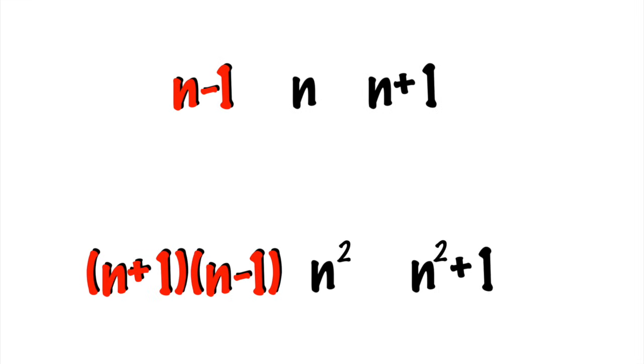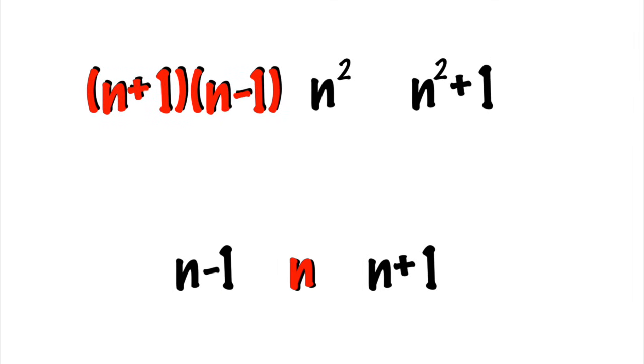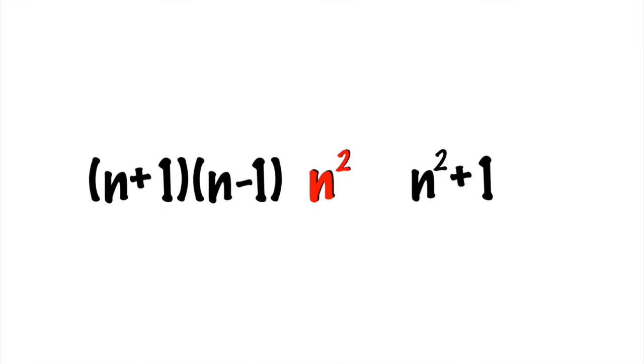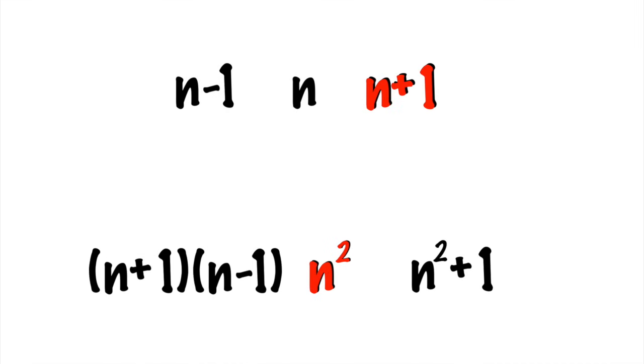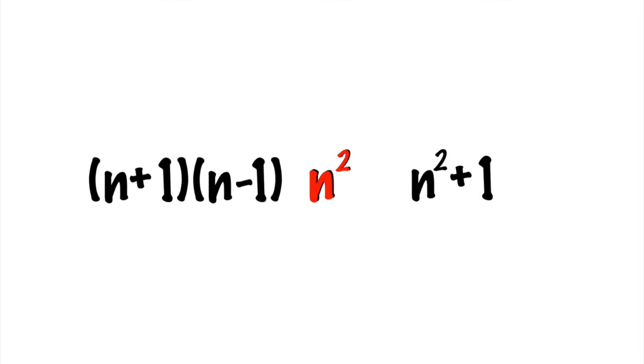When n minus one is divisible by three, so is n squared minus one. When n is divisible by three, then n squared is divisible by three. And if n plus one is the multiple of three, then it's going to go back to n squared minus one. So no matter what, these are the only two options that will ever be divisible by three. Which means that n squared plus one is just a loser.